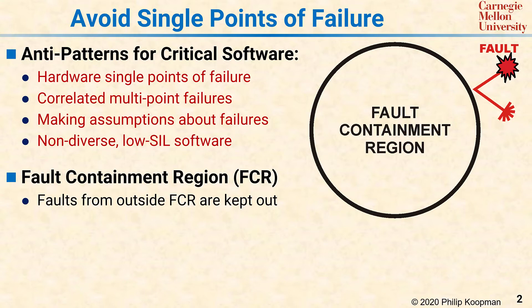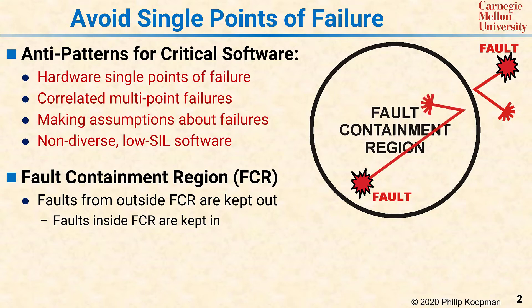The second half of the definition of an FCR is that any fault inside the FCR stays inside the FCR and cannot have its effects escape the FCR boundary. In other words, the idea of an FCR is that faults inside stay inside the boundary, faults outside stay outside, and the effect of a fault cannot cross an FCR boundary.